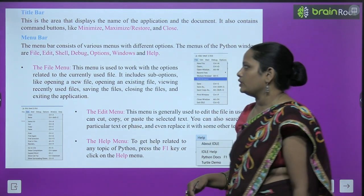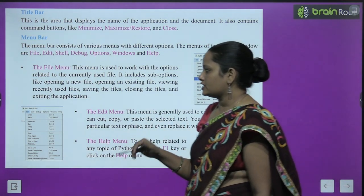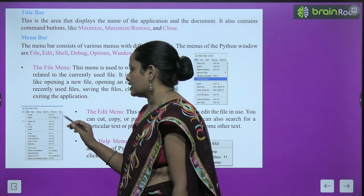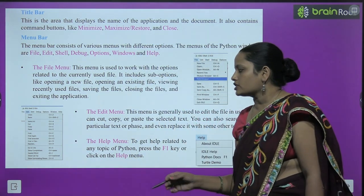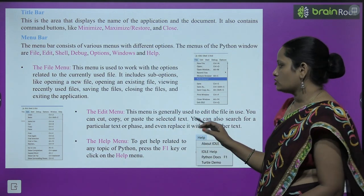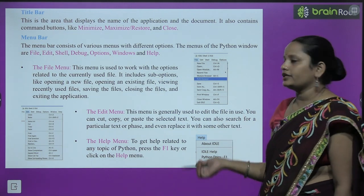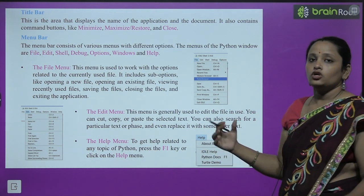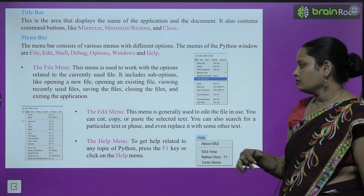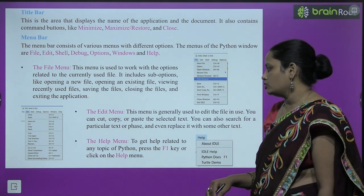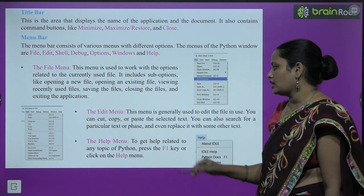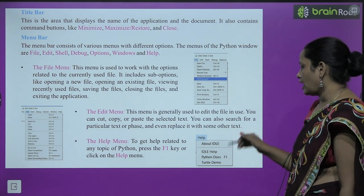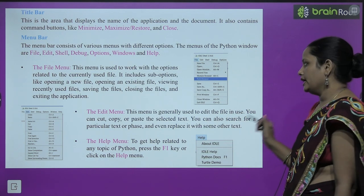The Edit menu is used for editing the file. Then comes the Help menu. In the Help menu you get About IDLE — meaning all information related to the program. If you have any query, you can find it in Help. You can press F1 or use the Help menu. All solutions to your problems can be found here. You can get help about IDLE from here.